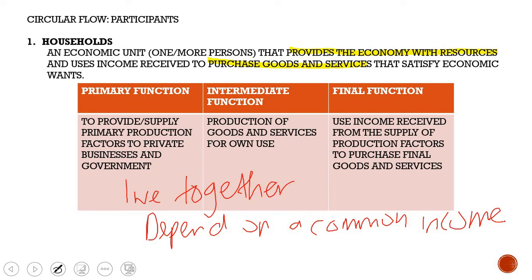Households have three different functions. The first is the primary function, which is to provide or supply primary production factors to private businesses and government. The second is the intermediate function, which is the production of goods and services for their own use. And the third is the final function, which is to use income received from the supply of production factors to purchase final goods and services.